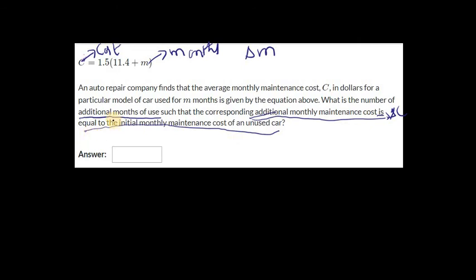So the equation—let me write down the equation again—it's c equals... actually, multiply this 1.5 to both of them. 1.5 times 11.4 is 17.1 plus 1.5m. This is the equation. The change in c equals the initial cost, right? So what is the initial cost? How do we get to the initial cost?